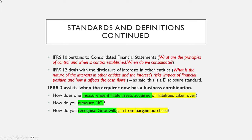IFRS 3, which is what we'll be dealing with today, assists when the acquirer has a business combination. So how do you measure identifiable assets acquired or liabilities taken over? How do you measure NCI? How do you recognize goodwill or a gain from bargain purchase? These will be the focus elements of this video today — the IFRS 10 component and the IFRS 3 component.